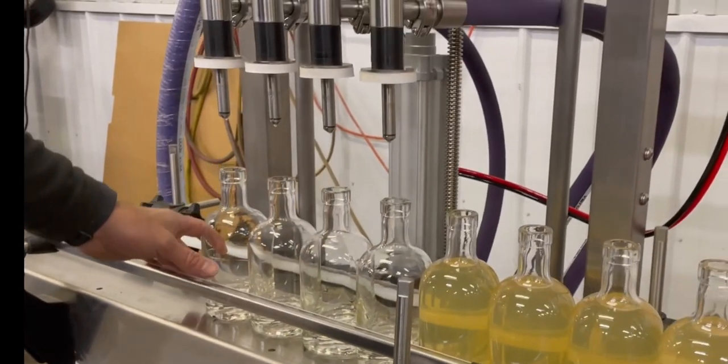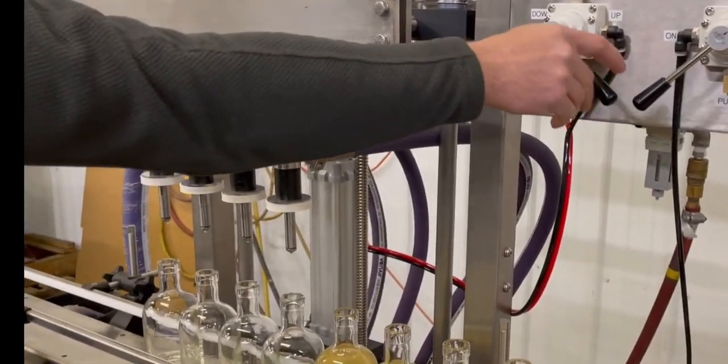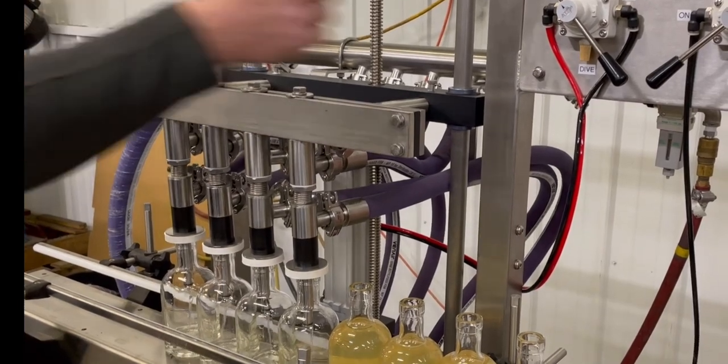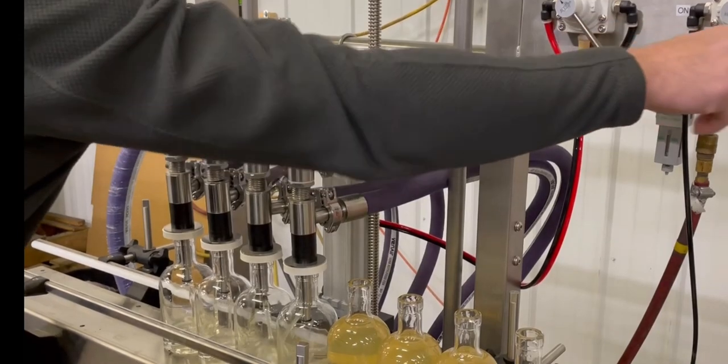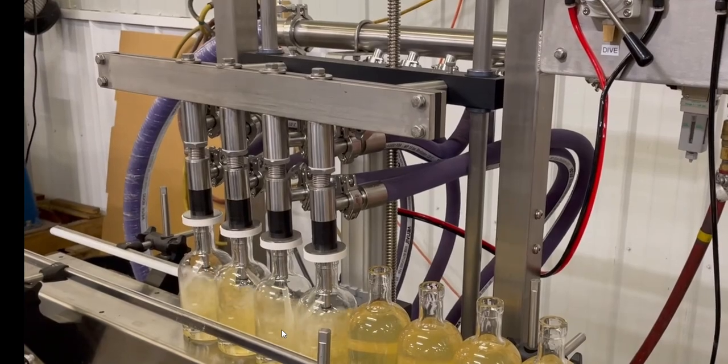As you can see when we got the bottles underneath, the machine will dive down. Once the machine is fully dove down, you can see that the opening ports for the fill ports are fully exposed and you can also see the return port and chamfer is fully exposed. Then your pump will want to be activated. That will start to fill.